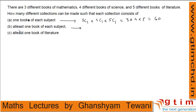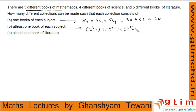Second question: at least one book of each subject. For mathematics, selecting at least 1 from 3 gives 2 power 3 minus 1 = 7 ways. For science, 2 power 4 minus 1 = 15 ways. For literature, 2 power 5 minus 1 = 31 ways. So total is 7 × 15 × 31.